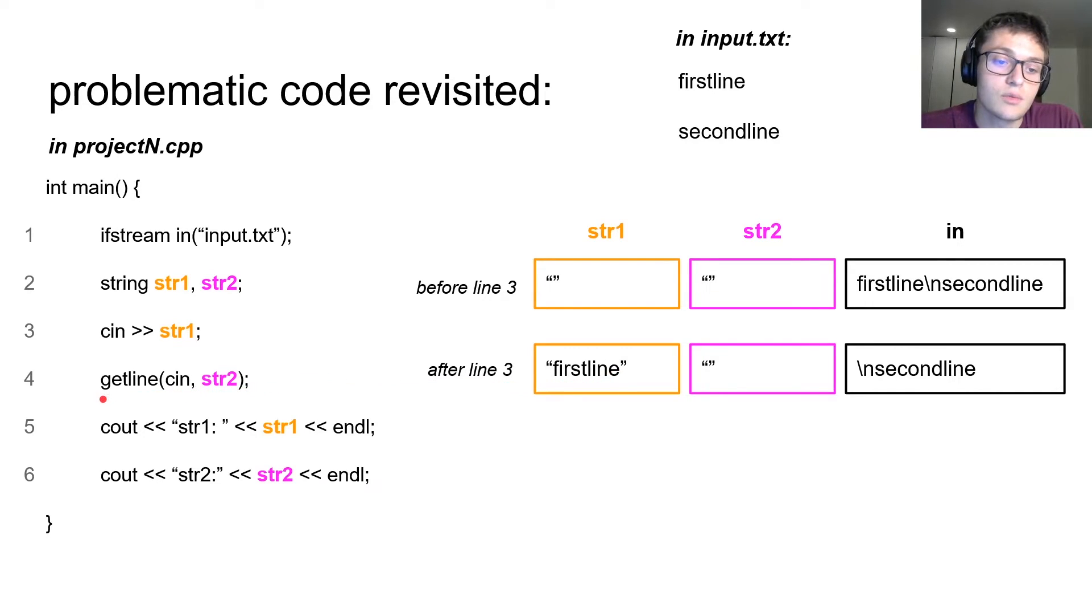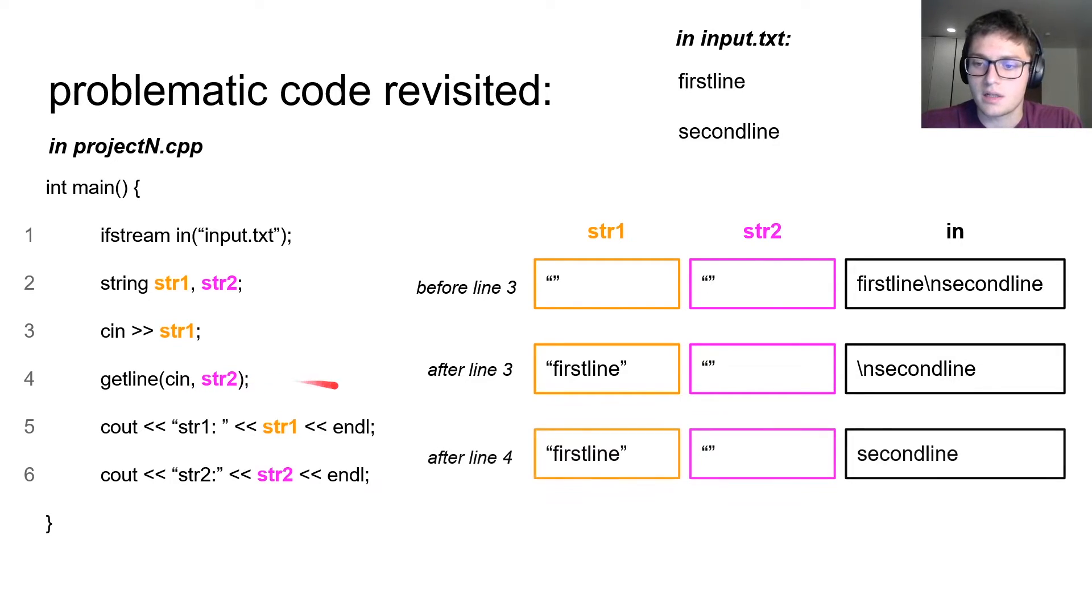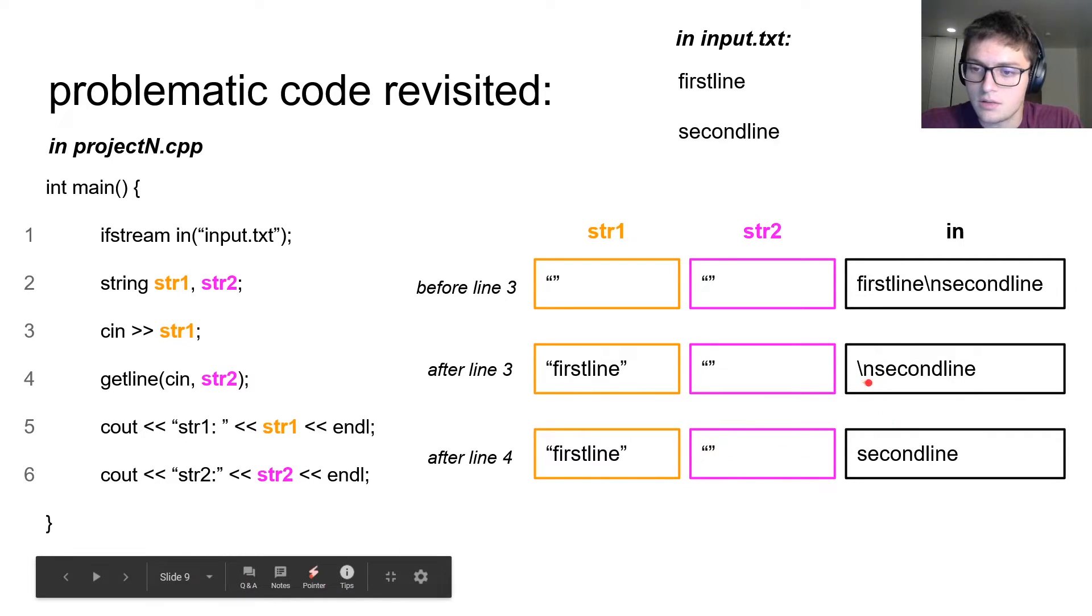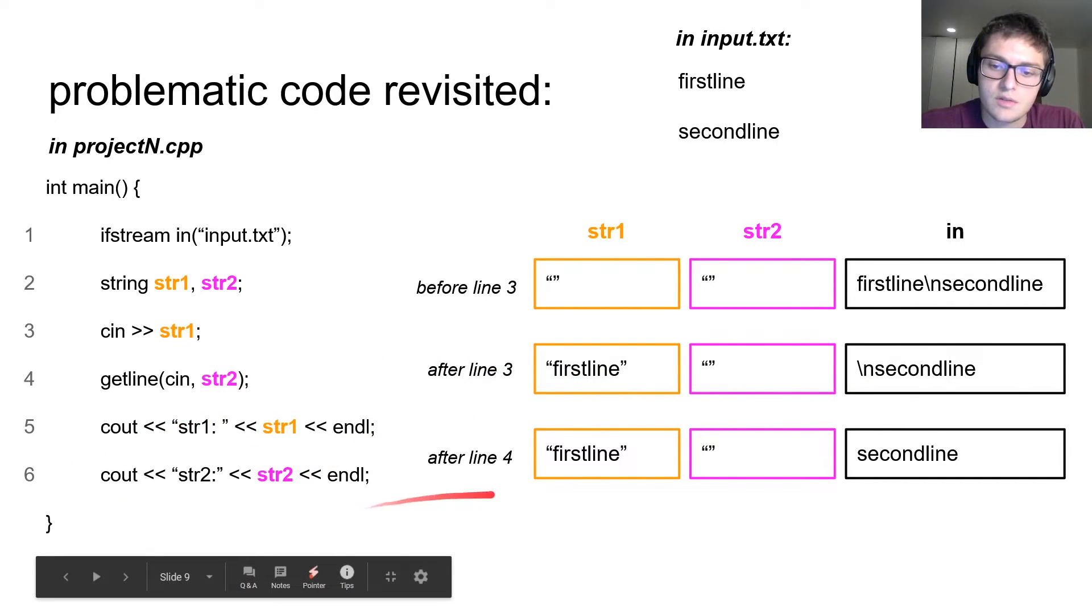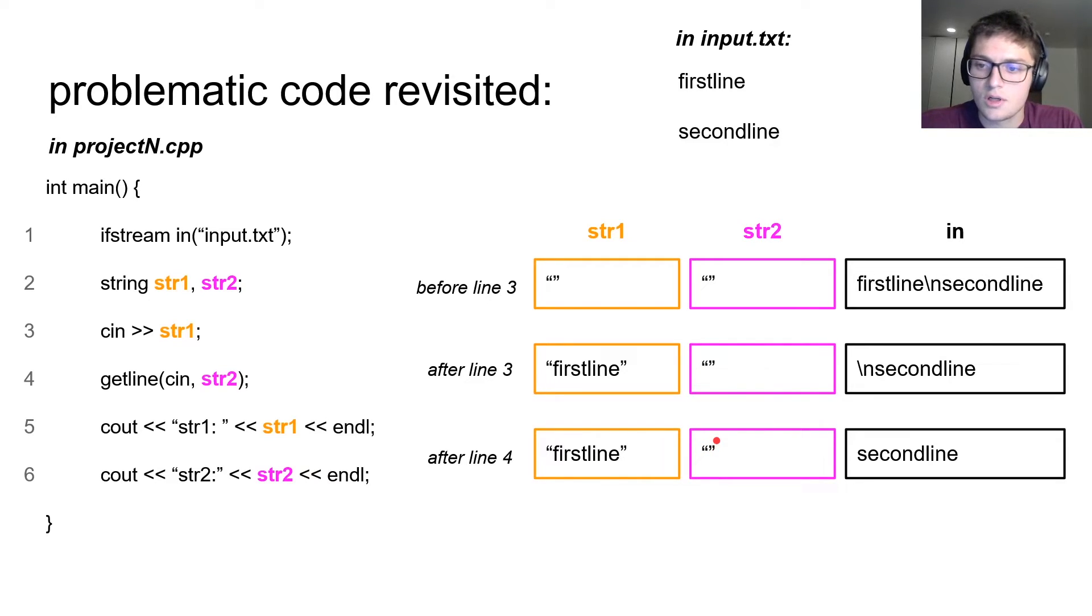However, when we use getline here, what getline does, if you remember, is it grabs all the characters up to, but not including the newline character. And the newline character is the first character on the stream. So after line 4, string 2 is still empty. The only thing we've done is remove that newline from the stream. So that is why when we print out string 1, we get first line, and we print out string 2, we get nothing. All that getline call did was remove this newline character from the stream.